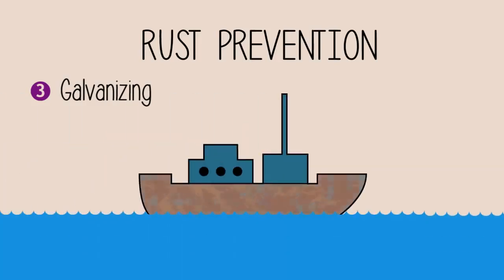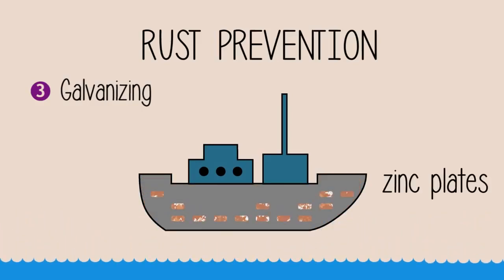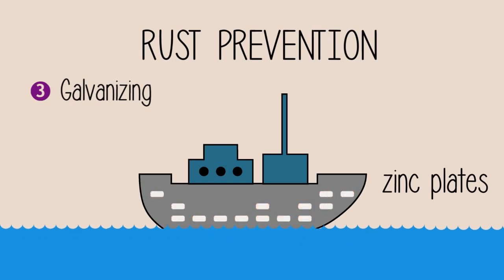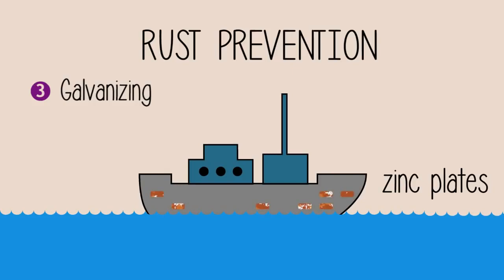So besides preventing rusting, there is another advantage to this galvanizing process. The formed zinc oxide layer can be removed and the freshly exposed zinc can corrode once again, thereby further protecting the iron or steel hull.